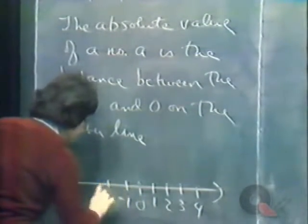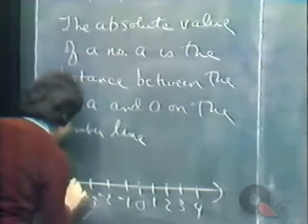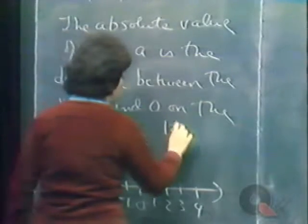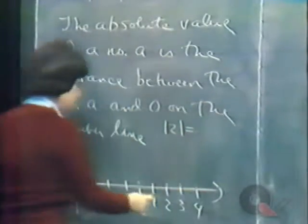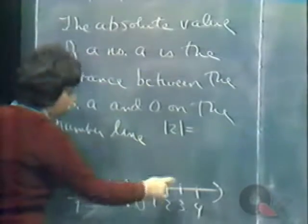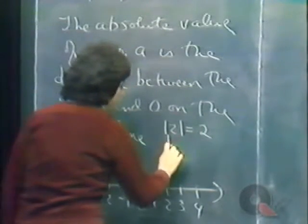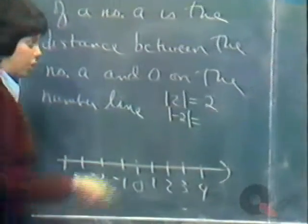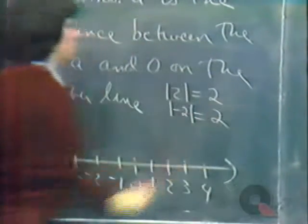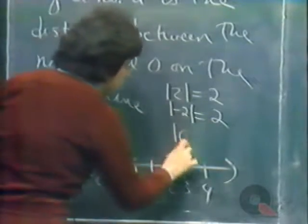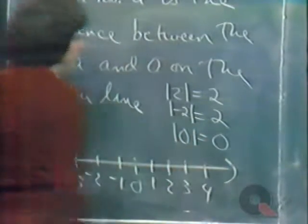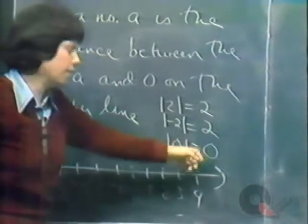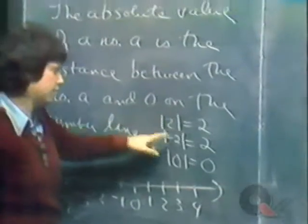Here is a number line. The absolute value of 2 is the distance between 2 and 0 on the number line — that's 2 units. The absolute value of minus 2 is also 2 units. The absolute value of 0 is 0. The absolute value of a number can never be negative; for positive or negative numbers, the absolute value has to be positive.